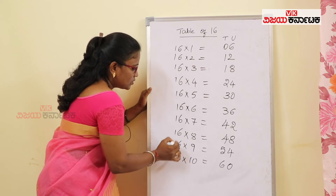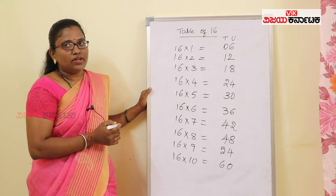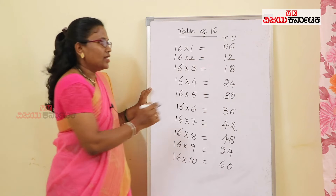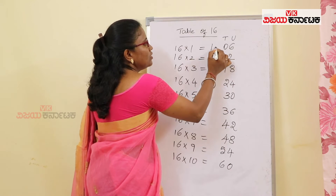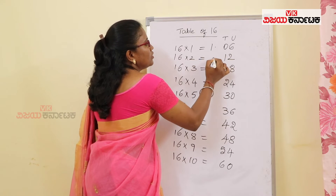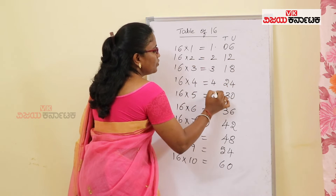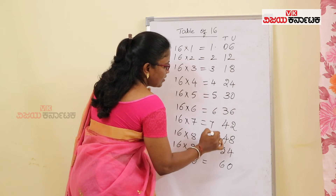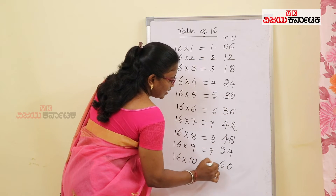So, I will have 16 tables. How many tables? 1, 2, 3, 4, 5, 6, 7, 8, 9, 10.